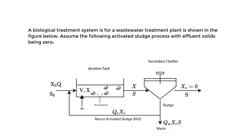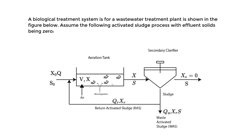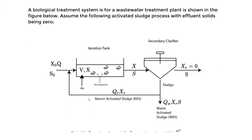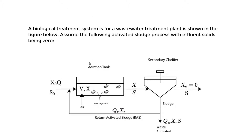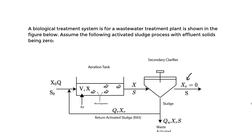Now let's look at an activated sludge process and determine the return recycled flow rate, which is going to be Q sub R. We have a biological treatment system for a wastewater treatment plant shown in the figure below. We're going to assume the following activated sludge process with effluent solids being zero — this is key. The effluent solids, X sub E, are assumed to be zero at the effluent exit.